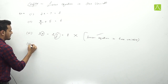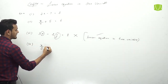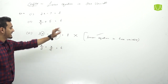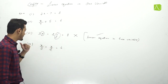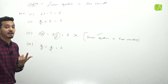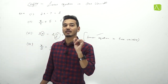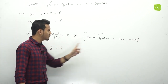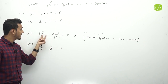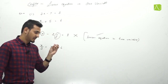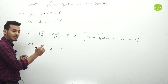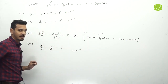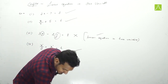One more example: x upon 3 plus x upon 2 equals to 6. Equation है क्योंकि equals to का sign है। Variable देखना है — एक ही variable है x, वो दो बार आ रहा है लेकिन variable एक ही है। x की maximum power 1 है। So this is linear equation in one variable. This is also a linear equation.